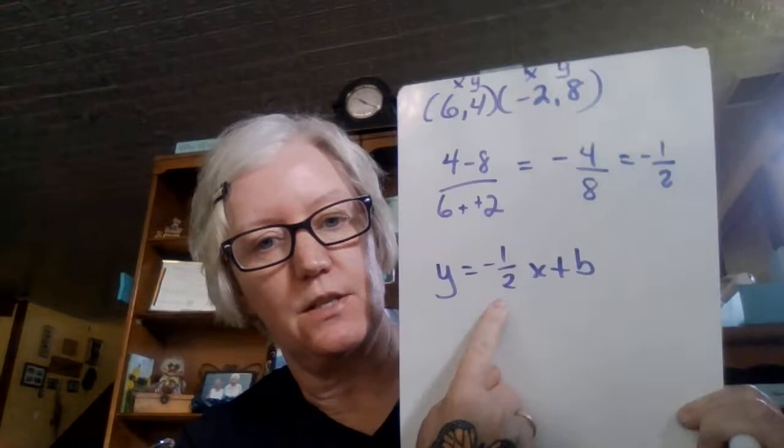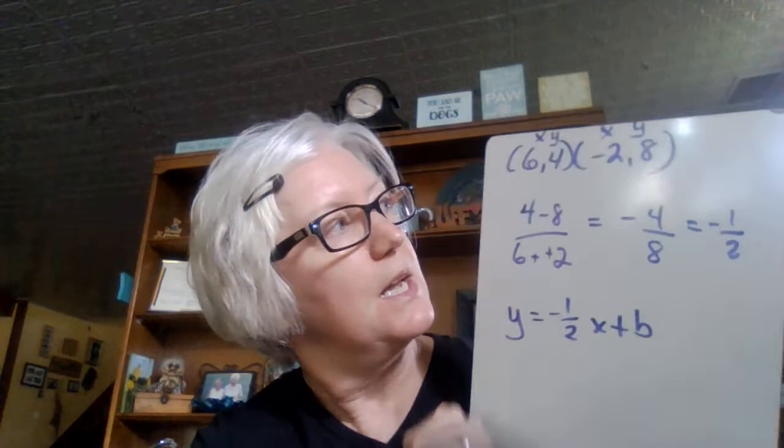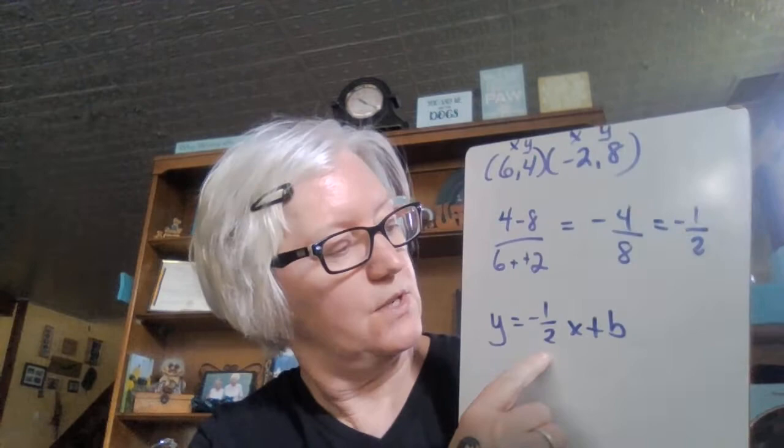So here's what I've got so far. I know part of my equation, but I don't know—because I know the slope, but I don't know the y-intercept. So here's where you're going to have to pick one of these points. And I'll show you that it works with either point. It doesn't matter. Just pick one of the points and plug in the x value where x is and the y value where y is. And then you already have your slope and then you have to solve for b. So I'm going to use the point (6, 4).